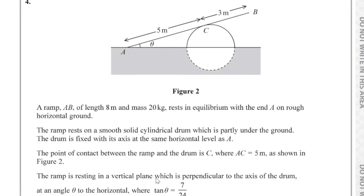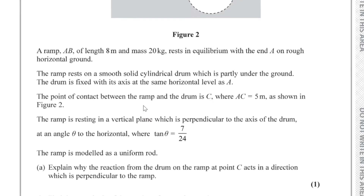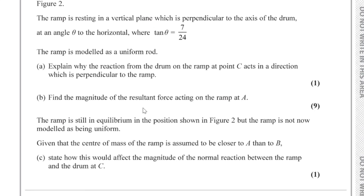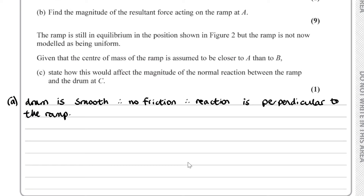For part a, we have to explain why the reaction from the drum on the ramp at point C acts perpendicular to the ramp. The drum is smooth, so there is no friction, and therefore the reaction is perpendicular to the ramp.